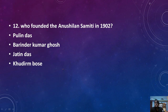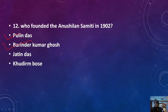Question: Who founded the Anushilan Samiti in 1902? The answer is actually two founders — Pubin Das and Barindra Kumar Ghosh. Both of them are the founders of the Anushilan Samiti. If both names appear as options, both should be considered correct.